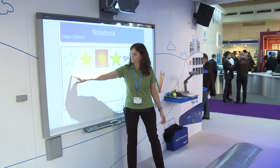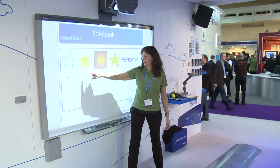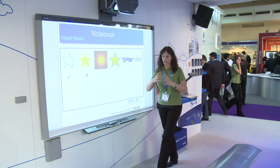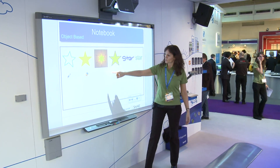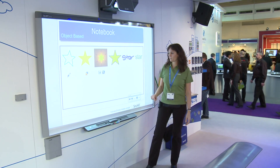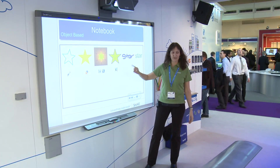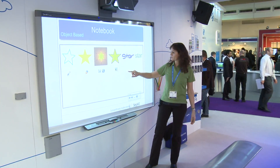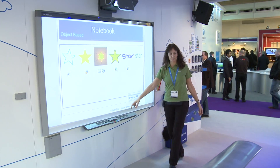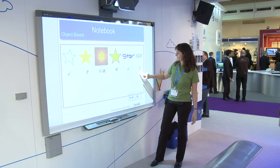You can draw with a pen, you can make a star with a shape, you can pick a picture from the internet. We have a gallery, I'll show you. You can write with a pen — just pick up a pen and you can write. And you can type.